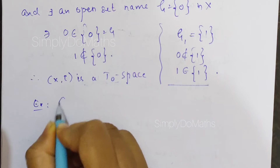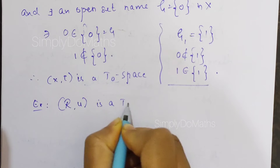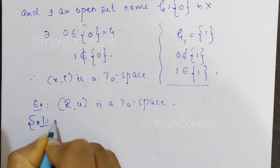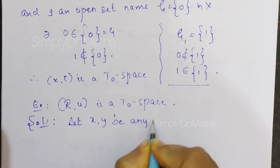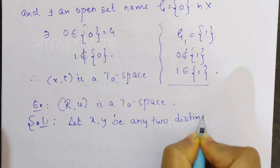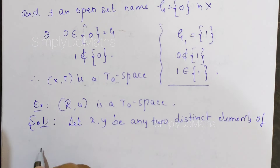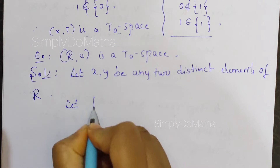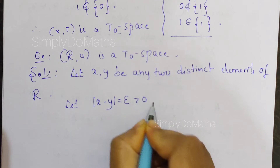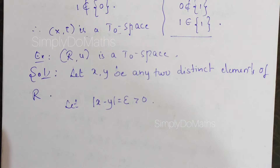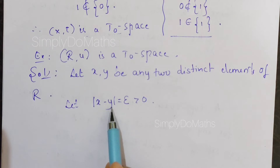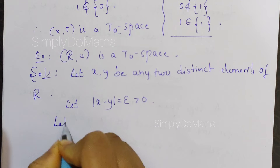Another example: the real space (R, U) is also a T0 space. Let's prove this. We consider two distinct points X and Y. Let |X − Y| = ε, which is greater than 0, because the distance between X and Y is ε — if they were the same point, X − Y would equal 0. So X and Y are any two distinct points. We need to consider one open set G.